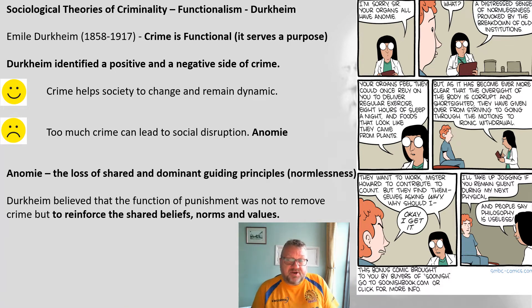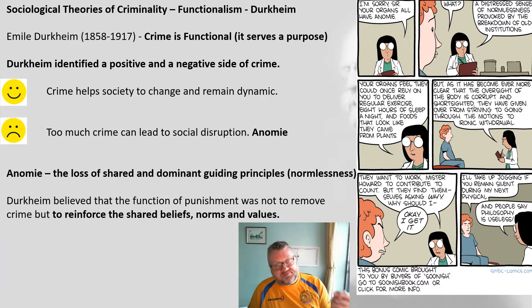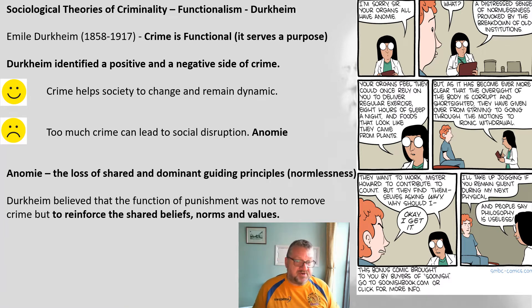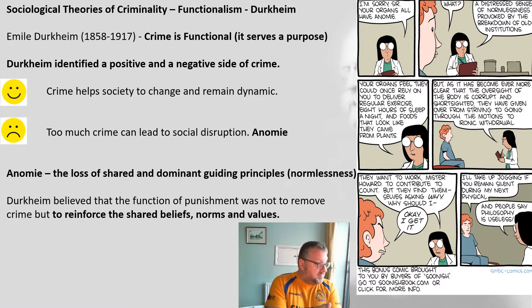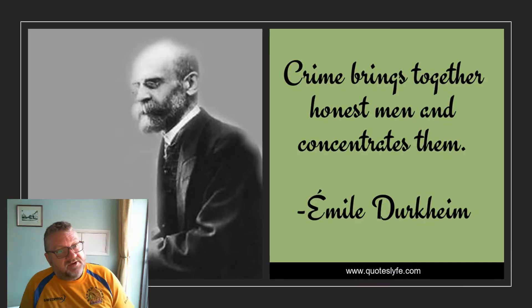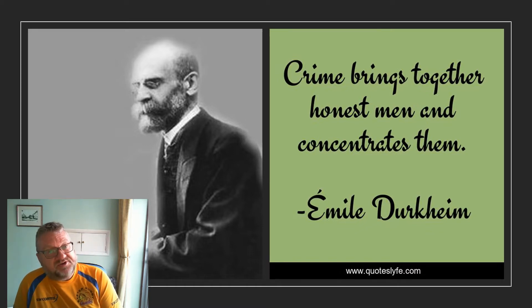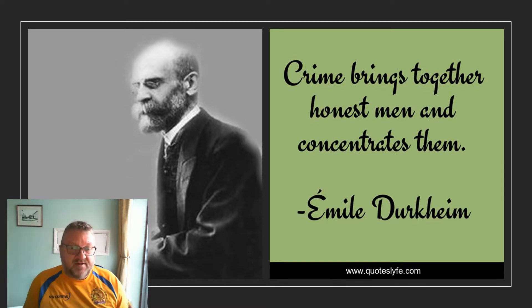This links to what Durkheim thought about the purpose of punishment. It wasn't about removing crime — punishment is much more about reinforcing the shared beliefs, norms and values of society, saying we will not accept this. You are going against society; what you've done breaks our rules, our norms, our values. It's a collective statement that this sort of behaviour is not acceptable. Durkheim's final quote sums it up: 'Crime brings together honest men and concentrates them' — crime makes society think about what's going on so it can adapt dynamically. Crime serves a function.